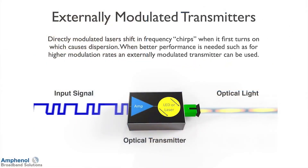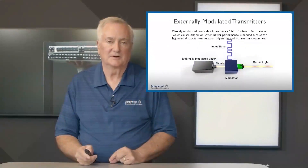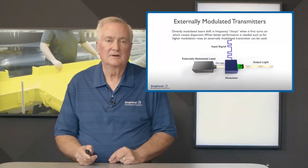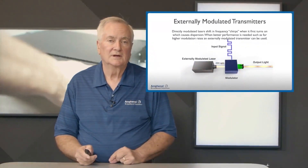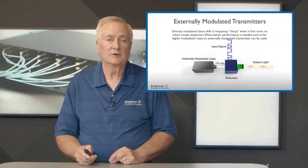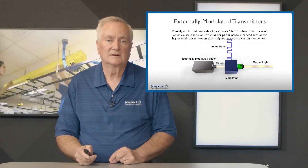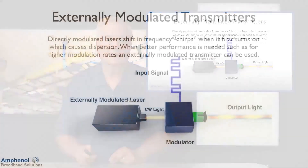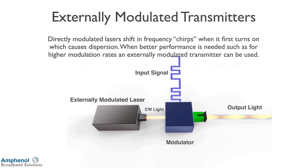To reduce chirp, we use externally modulated transmitters. We take the laser and produce a CW light — a continuous wave light. That light then goes into a modulator and creates the pulses of light on the output.